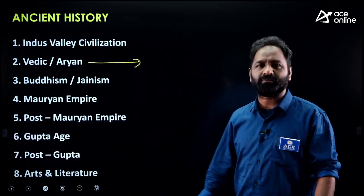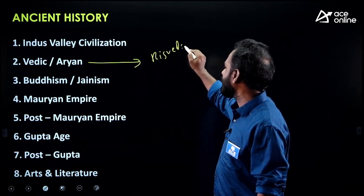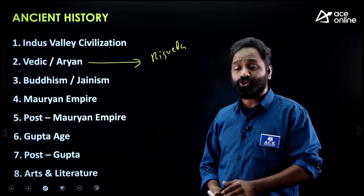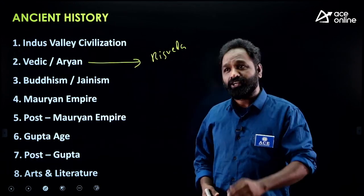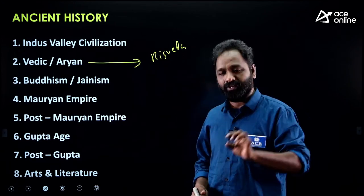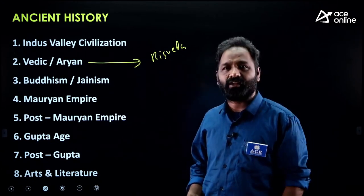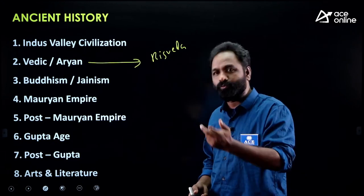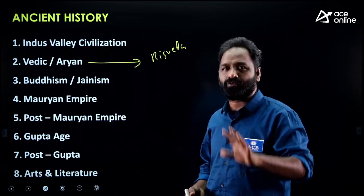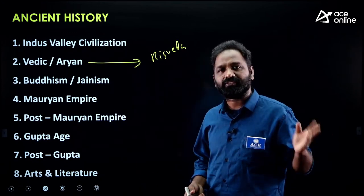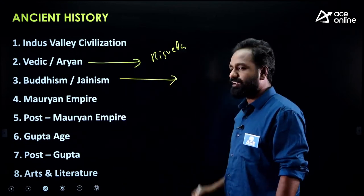For Vedic Civilization, they sometimes ask about the four Vedas: Rig Veda, Yajur Veda, Sama Veda, and Atharva Veda. You should simply know what is in Rig Veda, what is Brahmana, what is Aranyaka, what is Mahabharata, what is Ramayana, and how many Upa-Vedas are there. Know the content inside each Veda — that's enough.